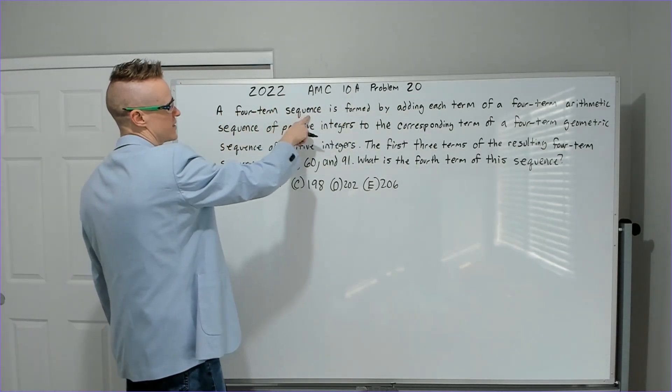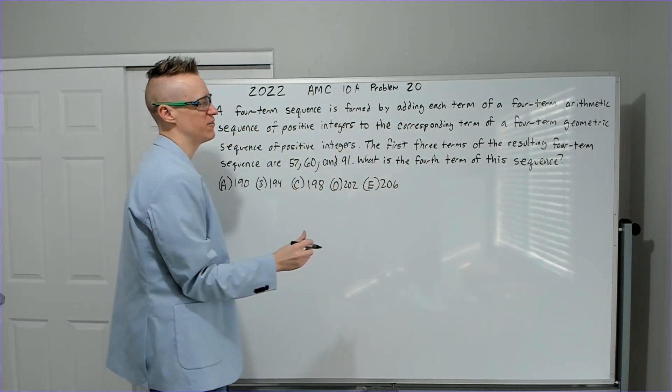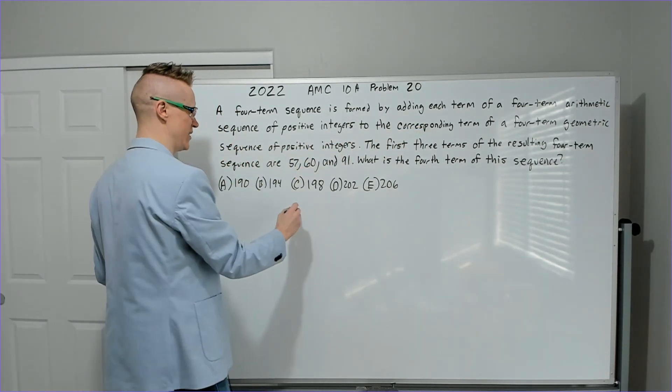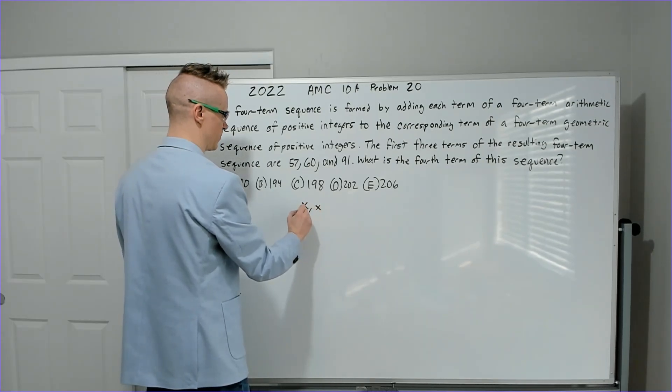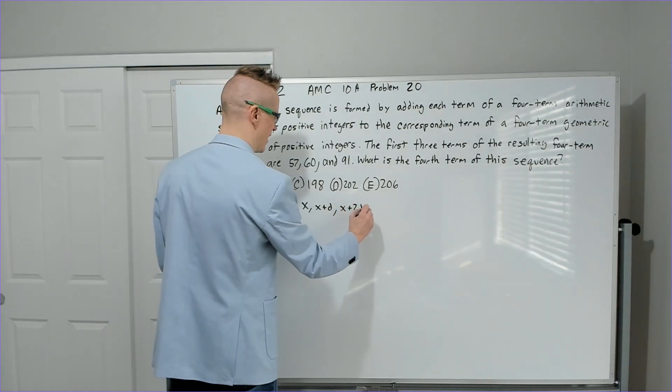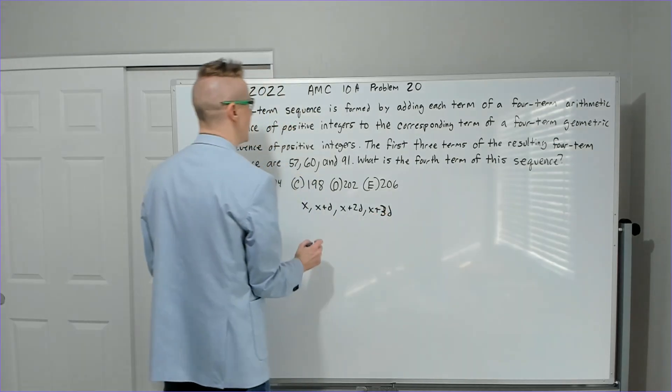A four-term sequence is formed by adding each term of a four-term arithmetic sequence of positive integers. So I'm going to start with that. I'm going to have X, X plus D, X plus 2D, and X plus 3D.